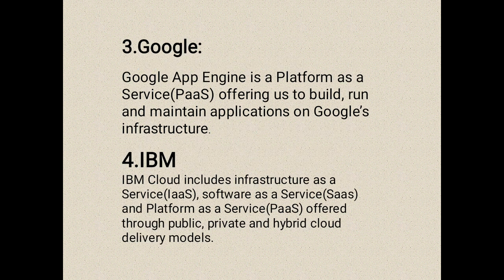The third one is Google. Google App Engine is a platform as a service offering to build, run, and maintain applications on Google's infrastructure. The fourth one is IBM Cloud, which includes infrastructure as a service, software as a service, and platform as a service offered through public, private, and hybrid cloud delivery models.